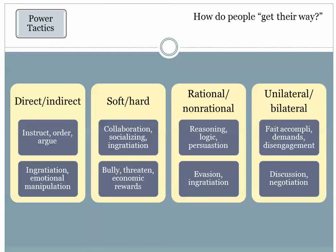You can distinguish among these various tactics along a number of dimensions. Some are more direct, others are more indirect. You can instruct, order, or argue, or you can ingratiate your way into favor, or try to manipulate the emotions of others. Some tactics, as Dr. Raven explains, are soft tactics; others are hard tactics. Hard tactics include bullying, threatening, withholding or offering economic rewards. Softer ones involve collaborating and cooperating with other people. Some rely on rationality; some are less rational, including evasion and fait accompli. Some involve a relatively mutual level of influence — those are bilateral discussion and negotiation. Some are unilateral, where one individual influences the other.